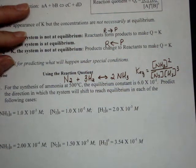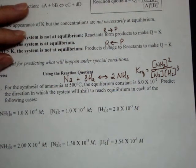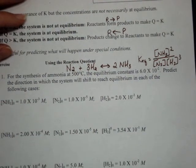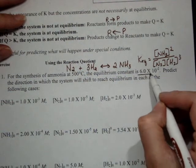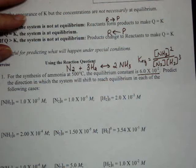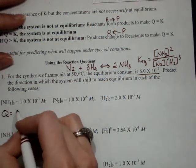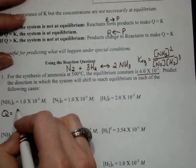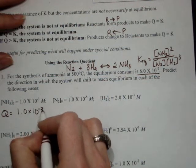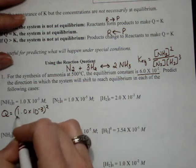So we have three different sets of concentrations here, and we're going to compare the values of those concentrations with the given K and see what happens. So for the first one, we're going to call it Q, the NH3 concentration 1 times 10 to the negative third, squared,